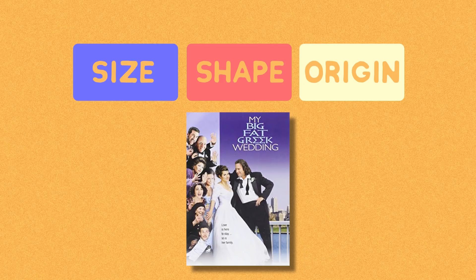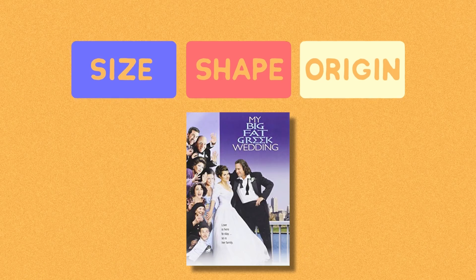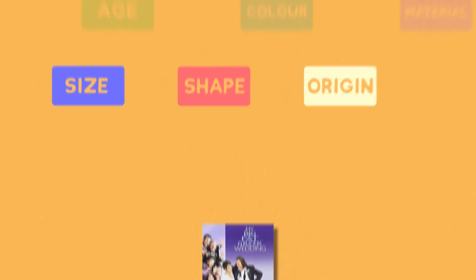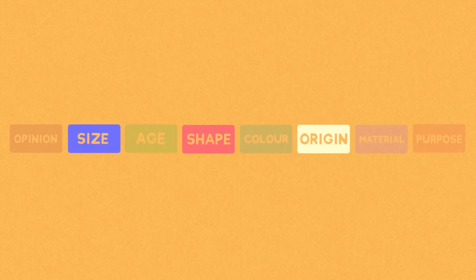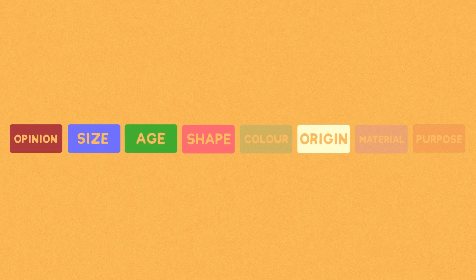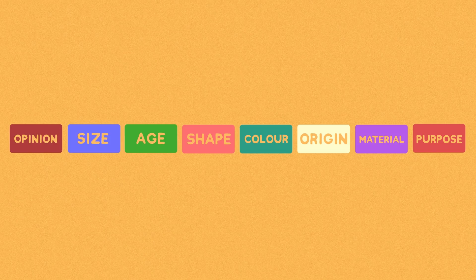This isn't random, and perfectly fits within the established order of adjectives. The full order being opinion, size, age, shape, colour, origin, material, purpose, and then noun.